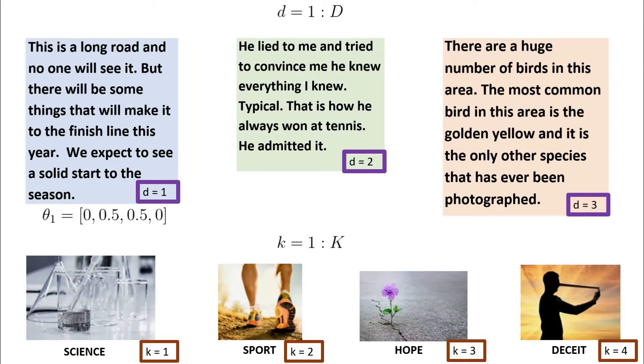Similarly then, we would want the distribution over topics for the second document to be mostly about deceit and a bit about sport too. So we would hope that LDA would give us something like theta_2 equals [0, 0.2, 0, 0.8].